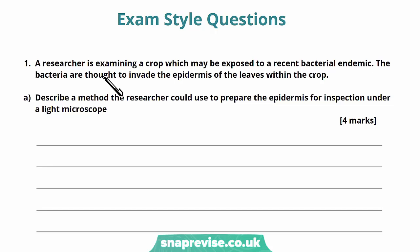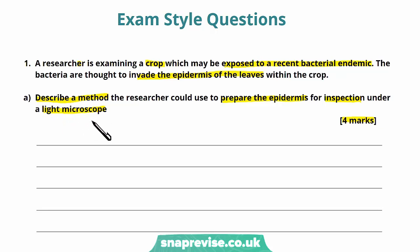The first question says a researcher is examining a crop which may be exposed to a recent bacterial endemic. The bacteria are thought to invade the epidermis of the leaves. Part A says: describe a method the researcher could use to prepare the epidermis for inspection under a light microscope, for four marks. When it says 'describe,' that command word means you need to list each step in the preparation. It's referring to the planning section where we talked about how to take an epidermis and prepare it for a slide.